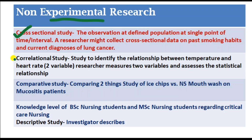A correlational study is used to identify the relationship between two variables — for example, the relationship between temperature and heart rate. The researcher measures two variables and assesses the statistical relationship between them. Two variables are correlated.